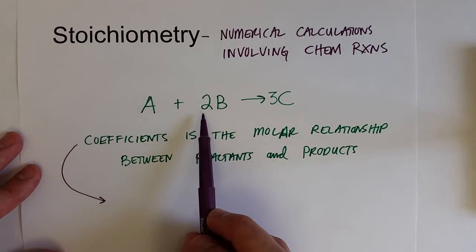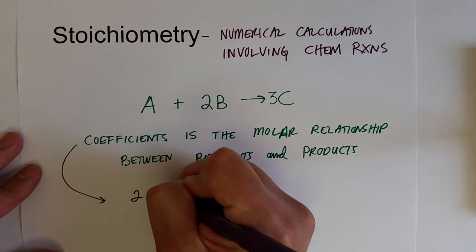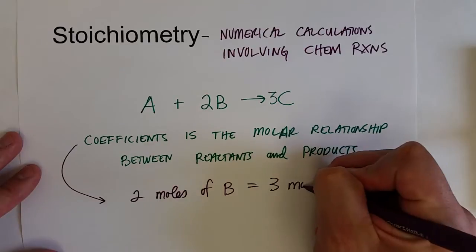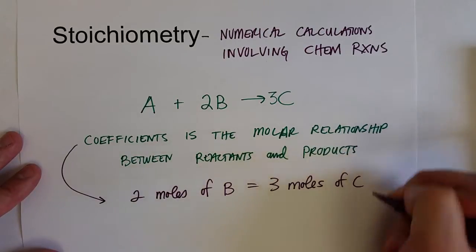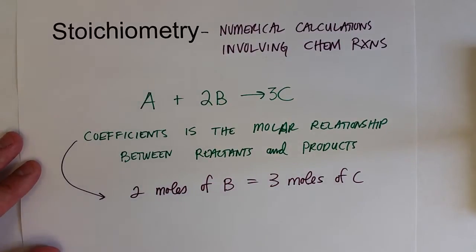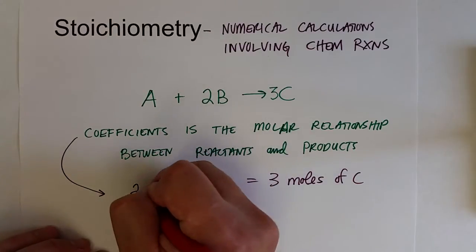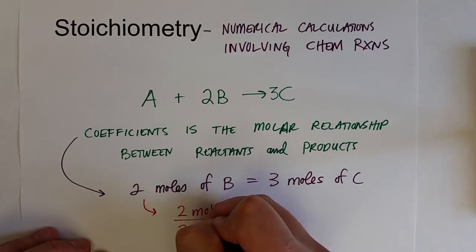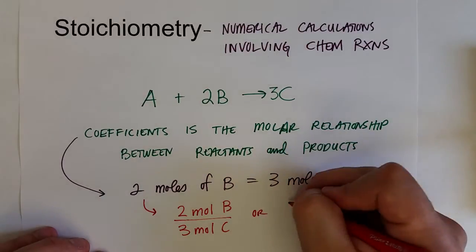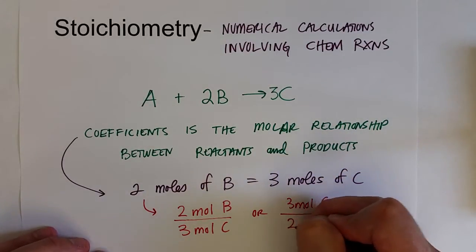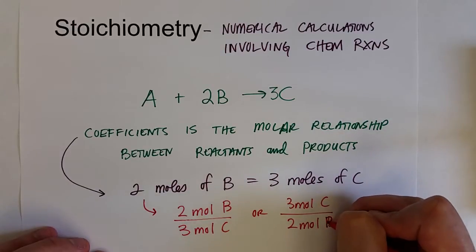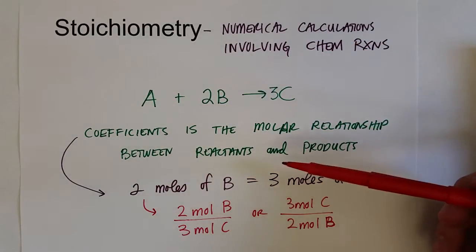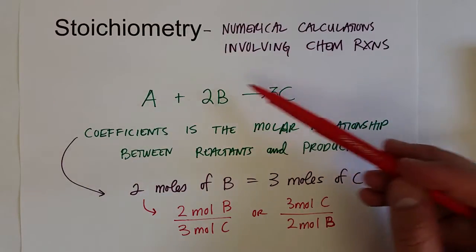We're going to use the coefficients as conversion factors. Let's talk about the relationship between B and C. If I have 2 moles of B, that will equal 3 moles of C at the end of this reaction. This relationship gives us two conversion factors: 2 moles of B per 3 moles of C, or 3 moles of C per 2 moles of B. We can use that for any reactant-to-product or product-to-reactant relationship.